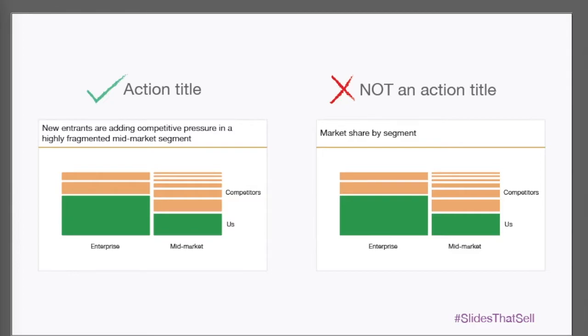Here you can see in our example the difference between an action title and a simple description. The action title lets us know exactly what the slide's main message is.